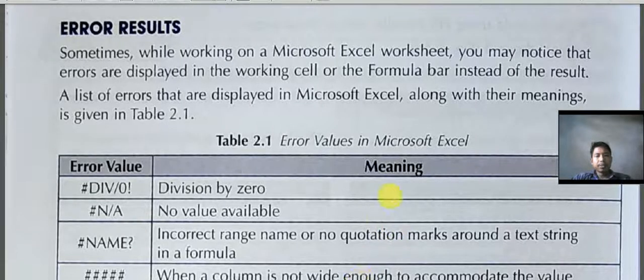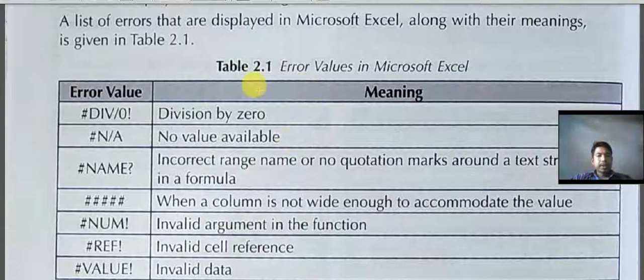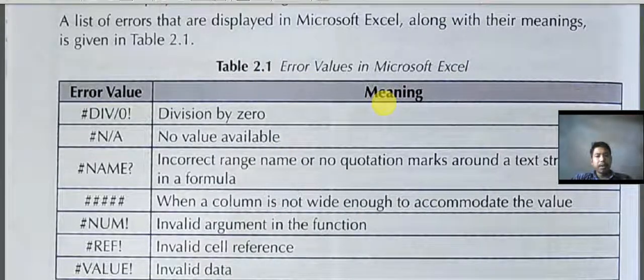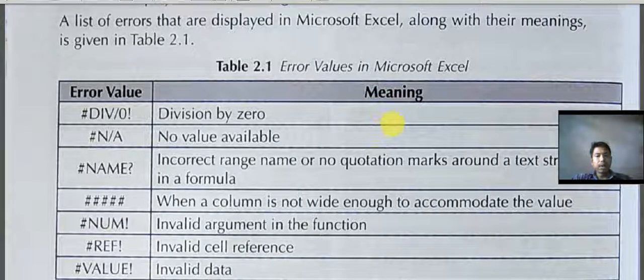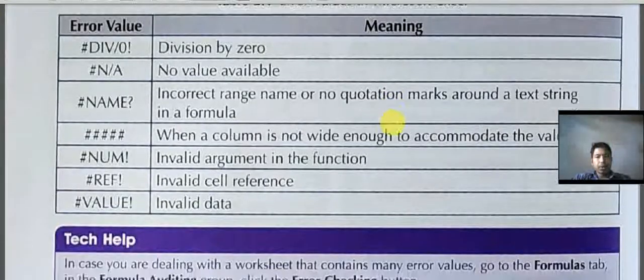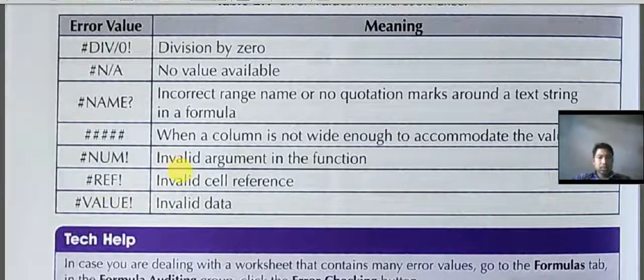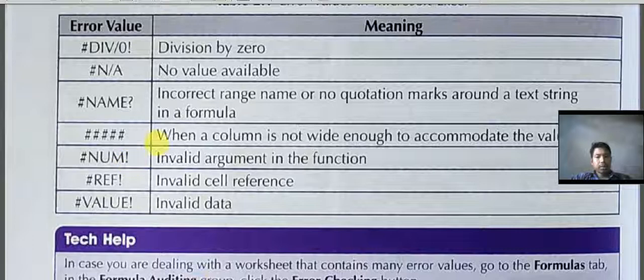Here you can see the different errors. #DIV/0! means when division is done by zero, so it will be infinity. #N/A means no value available. Then next is #NAME? - incorrect range, means if you've given wrong range or wrong address then this NAME error comes.